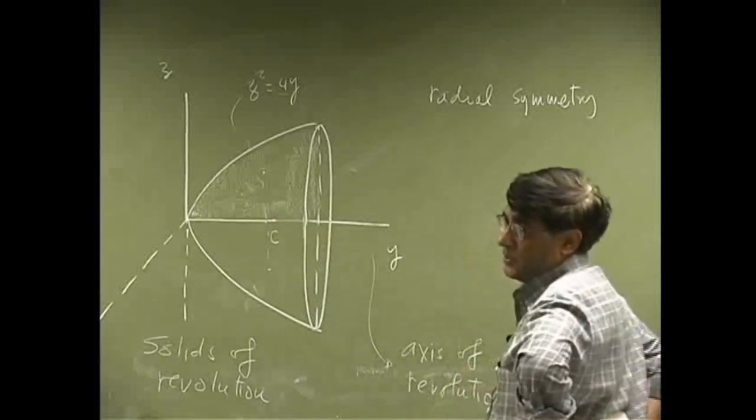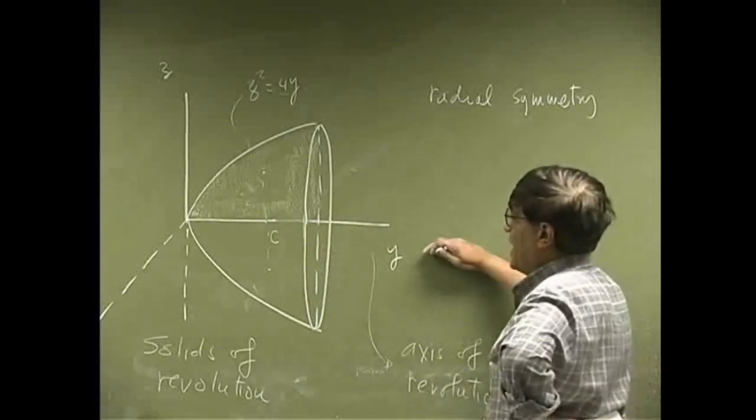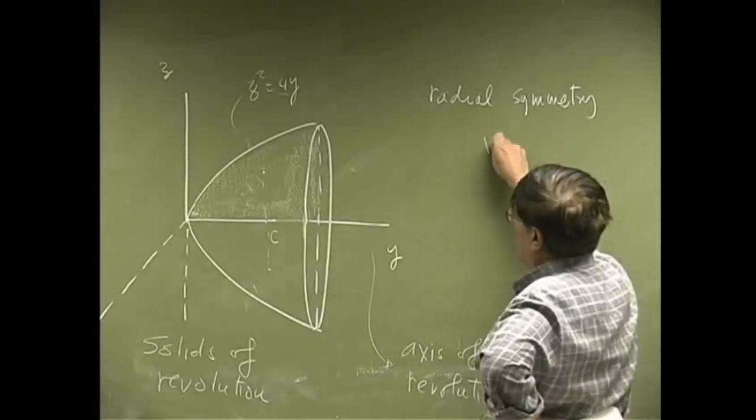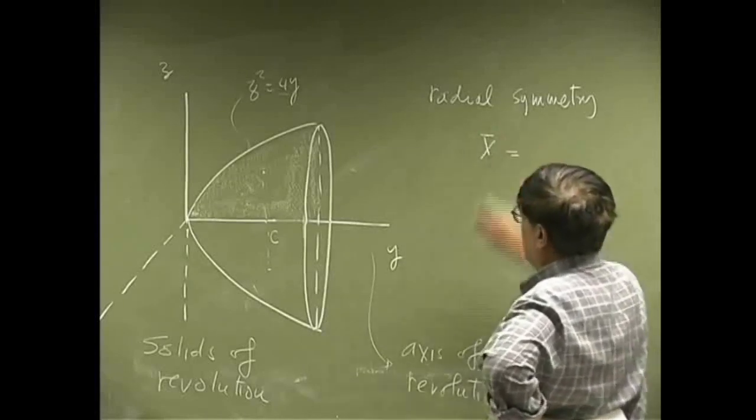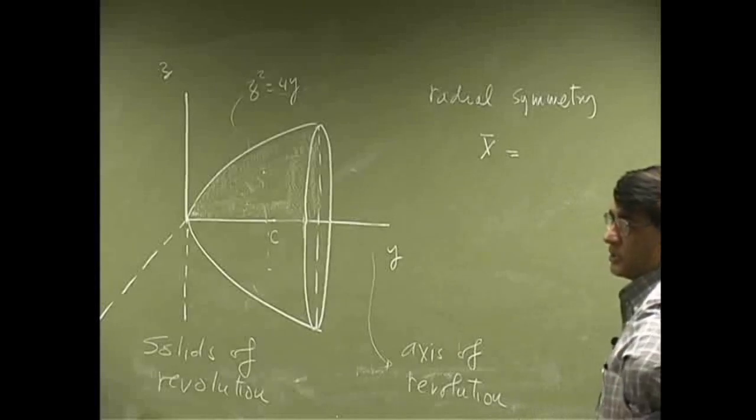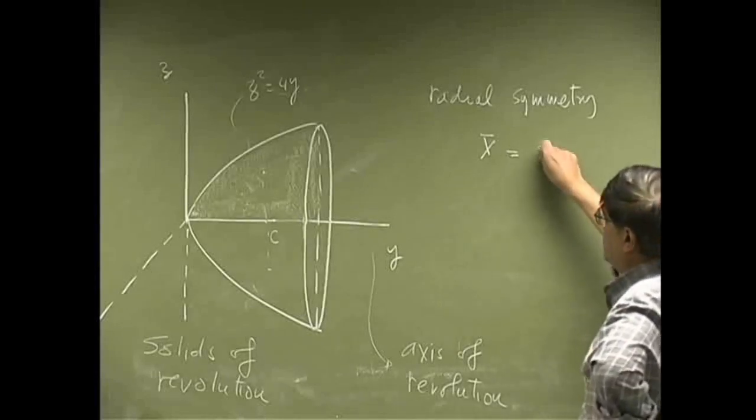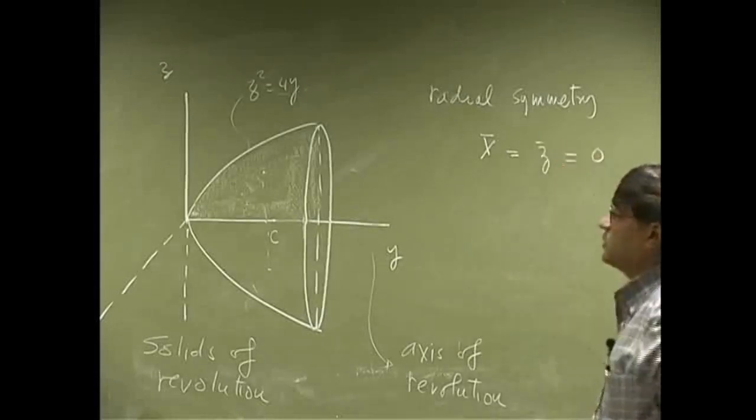Now, if we have a point on y-axis, then we can automatically conclude that the x-coordinate, or the x-bar, and the z-coordinate, those two have to go to 0.